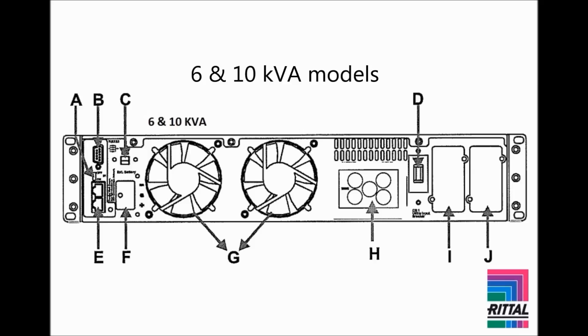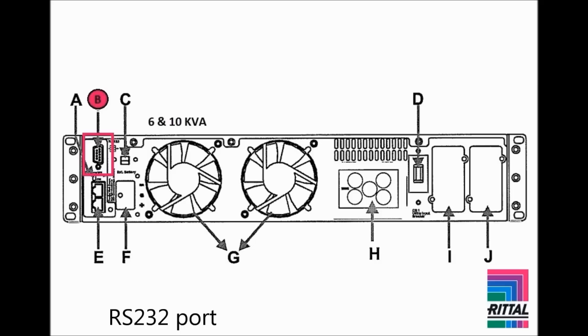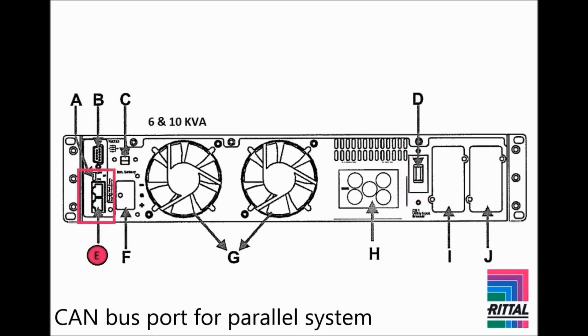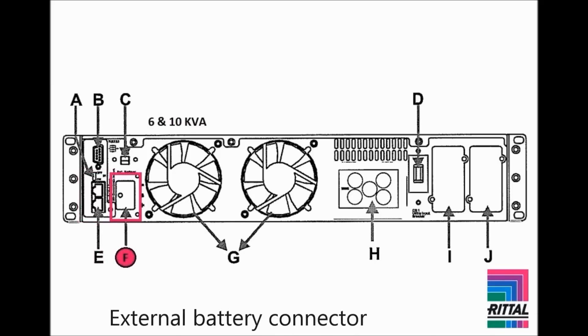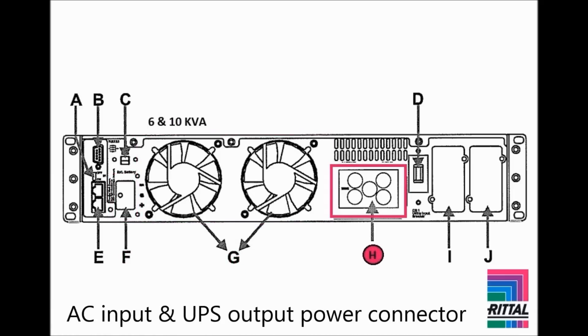The rear panels of the 6 and 10 kVA models are identical. You find a terminal resistor used for paralleling PMC-12 units. The communication port provides a true RS-232 serial interface which can be used with the free software to remotely monitor power and UPS status. There is an emergency power-off port. The AC input circuit breaker is a feature unique to the 6 and 10 kVA models of the PMC-12. So is the CAN bus port, which is used as a data interface when paralleling PMC-12 units. External battery packs can be connected to the external battery connector. There are two cooling fans. The 6 and 10 kVA models feature a combined AC input and UPS output power connector.